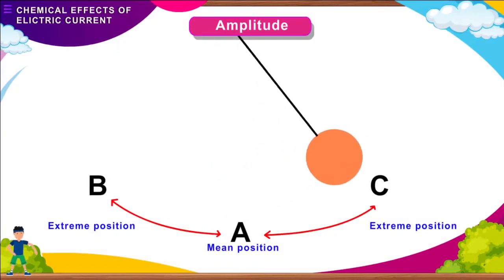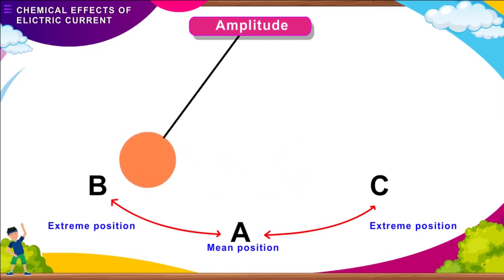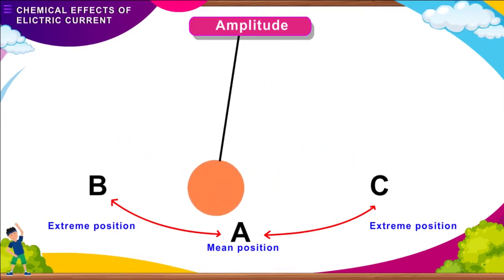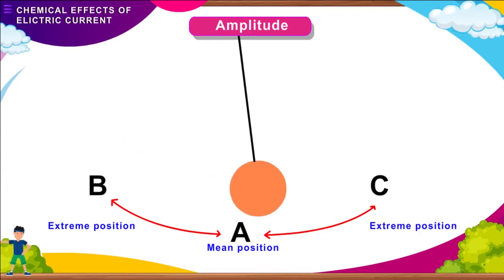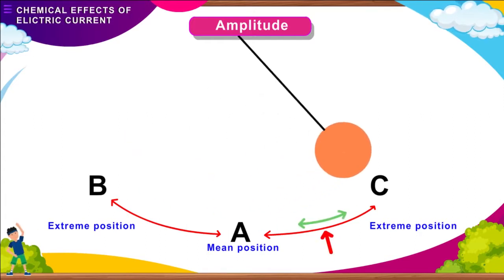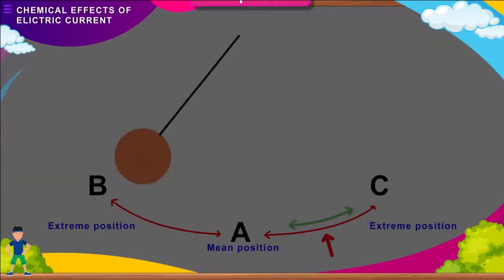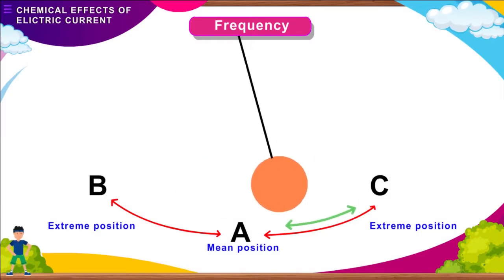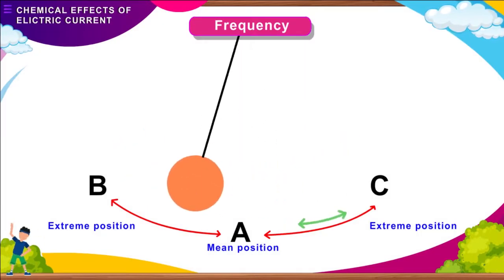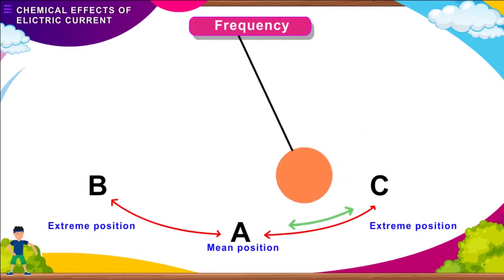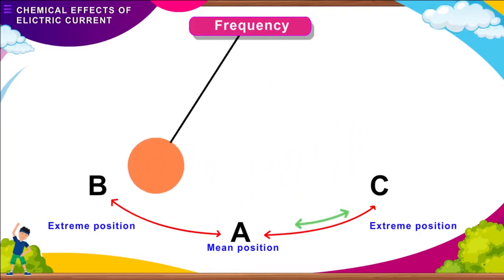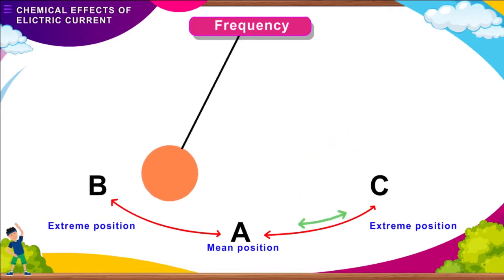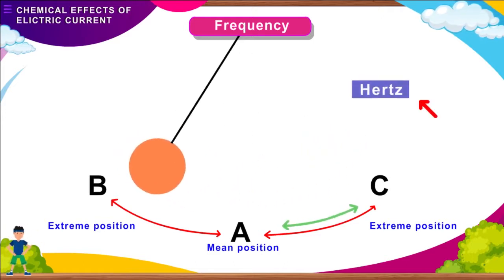The distance AC and AB is called amplitude. Amplitude of a vibration refers to the maximum distance moved by a vibrating body from the mean to the extreme position. The total number of vibrations taking place in one second is said to be its frequency. Frequency is measured in Hertz.